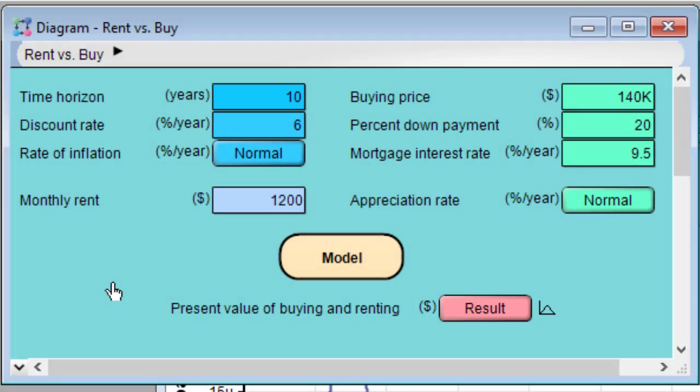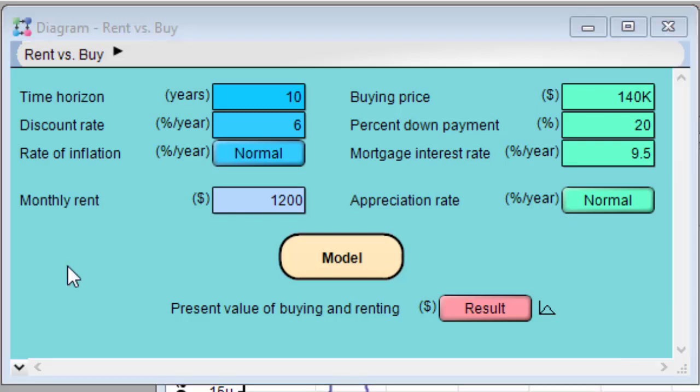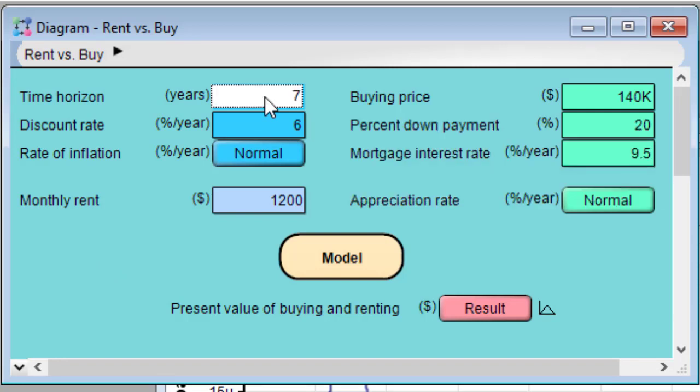Now let's change some of the inputs and recompute the rent versus buy comparison. Let's change the time horizon to seven years, the monthly rent to $1,400, and the buying price to $180,000.